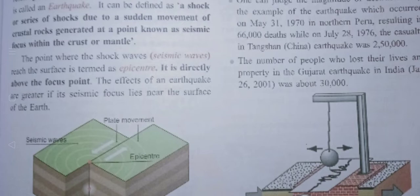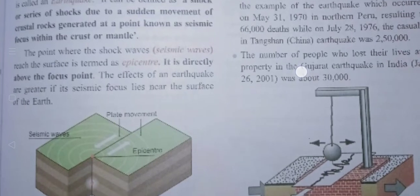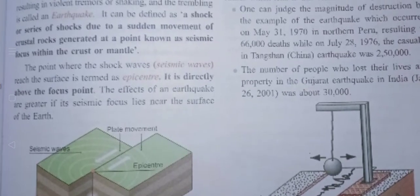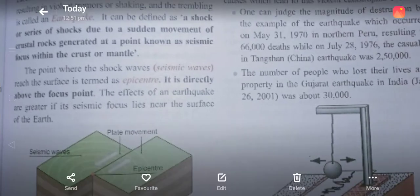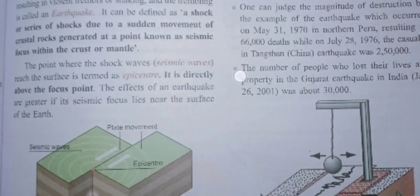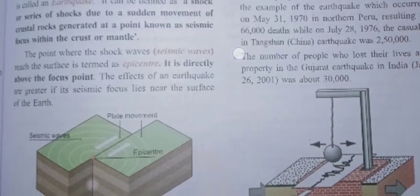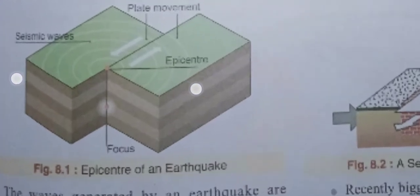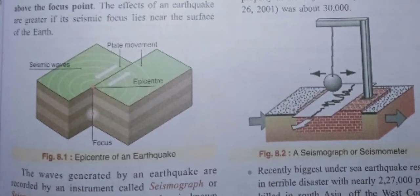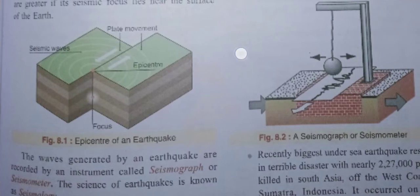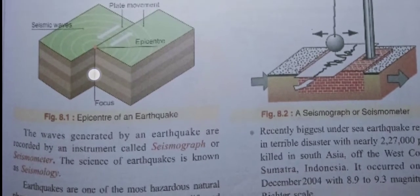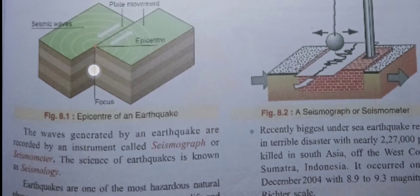The earthquake is generated at a point called the seismic focus. The seismic focus is located within the crust or the mantle. So the focus — where the earthquake originates — is in the crust or the mantle.